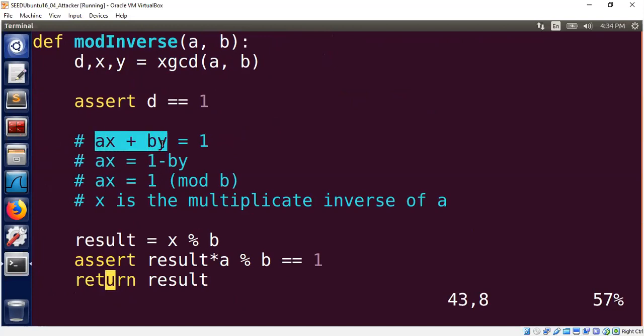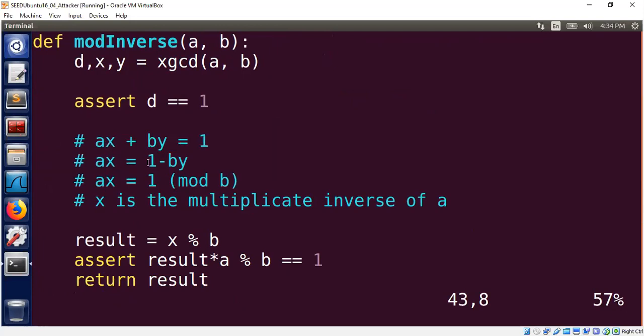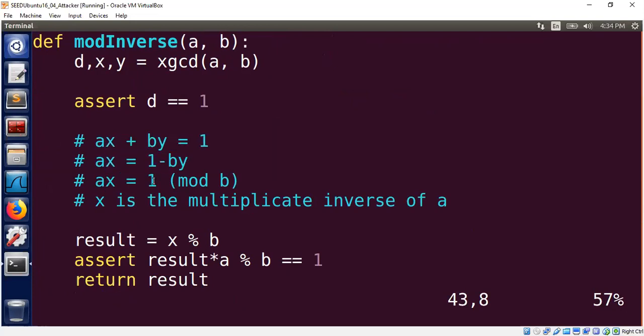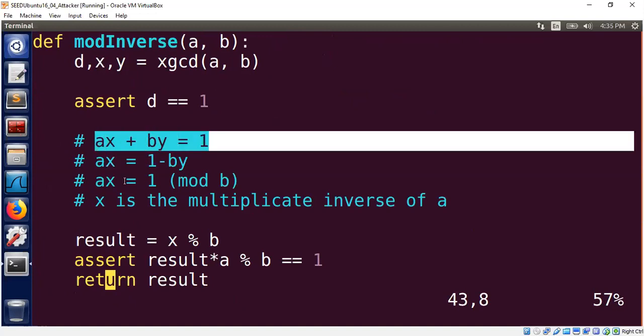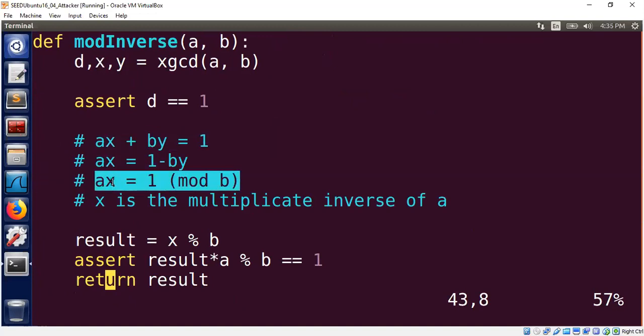The reason is simple, right? A times X plus B times Y is 1. So AX is 1 minus BY and AX is equal to 1 mod B. That's the reason. This comes directly from the definition of modular arithmetic. That means the X must be multiplicative inverse of A. So all you have to do is just call the extended Euclidean algorithm here. I'm using both the recursive and non-recursive.